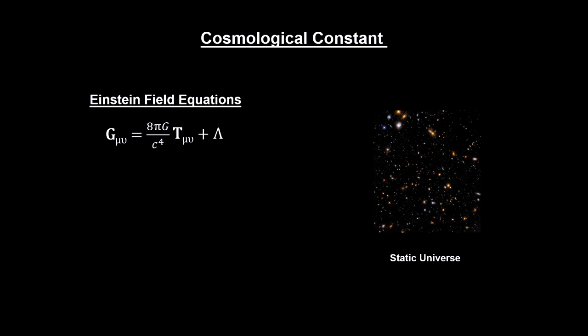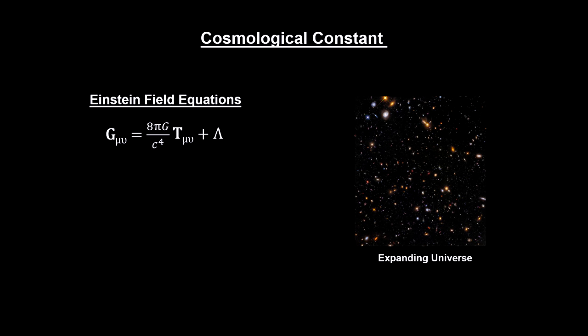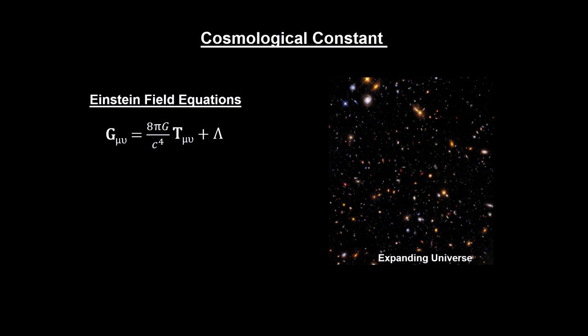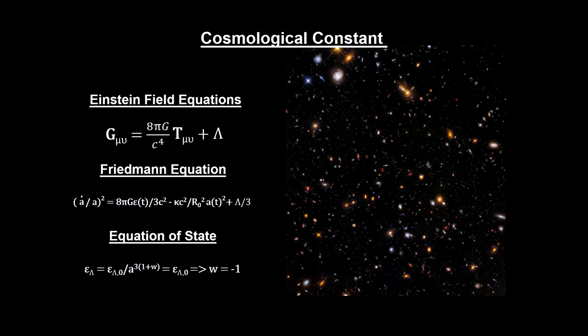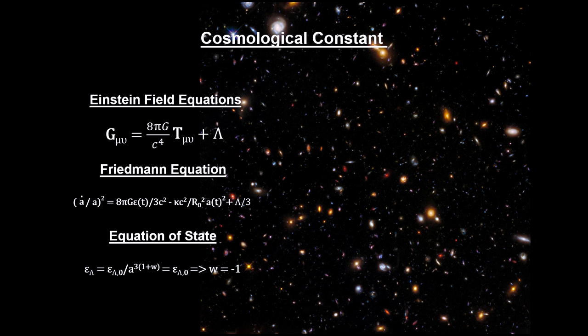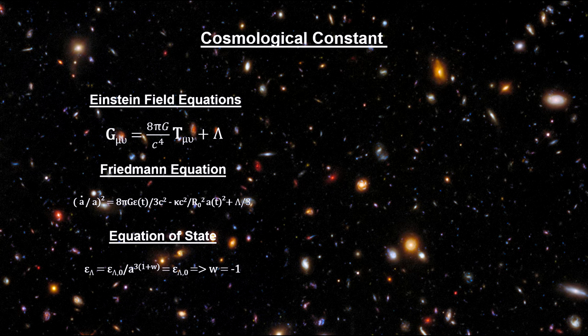We use the symbol lambda to represent this component of the universe. The symbol was first used by Einstein as a cosmological constant to account for a static universe. It went by the wayside when Edwin Hubble discovered that the universe was not static. But it has now been repurposed to represent this vacuum energy.